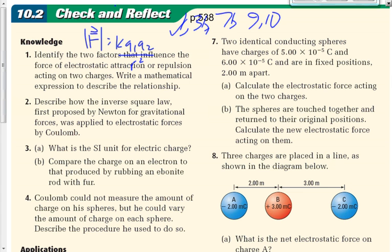Moving on to 3B. By the way, some of you have been asked: what does SI mean? It stands for Système Internationale — I can't say that with the right French accent, but that's what it stands for in French. It's the metric system, basically. The metric system units for electric charge are coulombs.